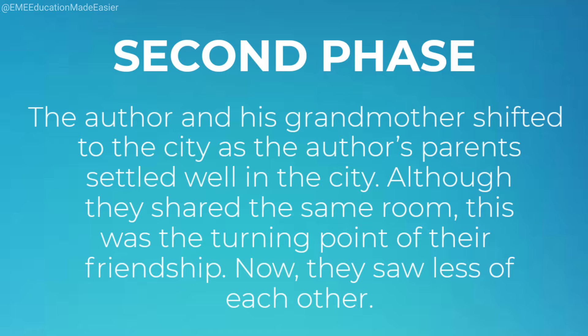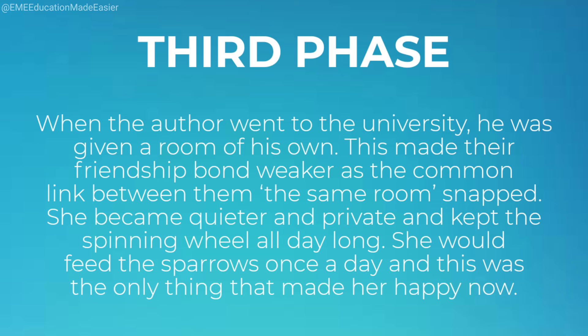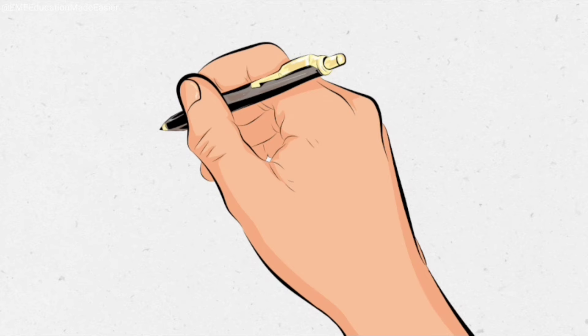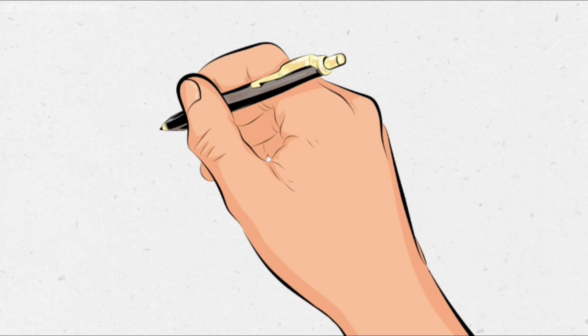The third phase was when the author went to university and was given a room of his own, making their friendship bond weaker as the common link between them was taken away. She became quieter and private, kept spinning the wheel all day long, and would feed the sparrows once a day — the only moment when she would be happy. In case of any doubts or queries, you can drop a message on Instagram or in the comment section below.